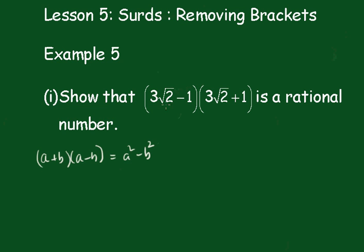So we've got this situation here. That will be equal to (3√2 - 1)(3√2 + 1) equals (3√2)² - 1².